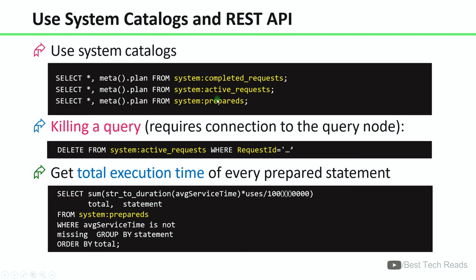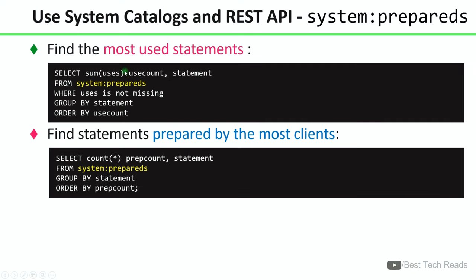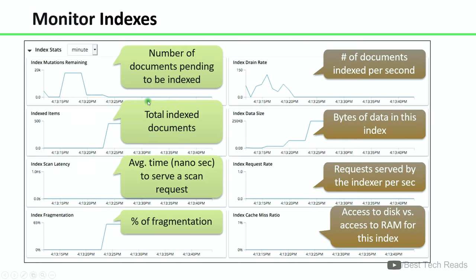These are the system catalogs to get completed requests, active requests, and prepared statements. There is a command to kill a query, a query to get the total execution time of every prepared statement, and a query to get how many times a statement was executed. You can use these commands to find the most used statements and to find statements prepared by the most clients.